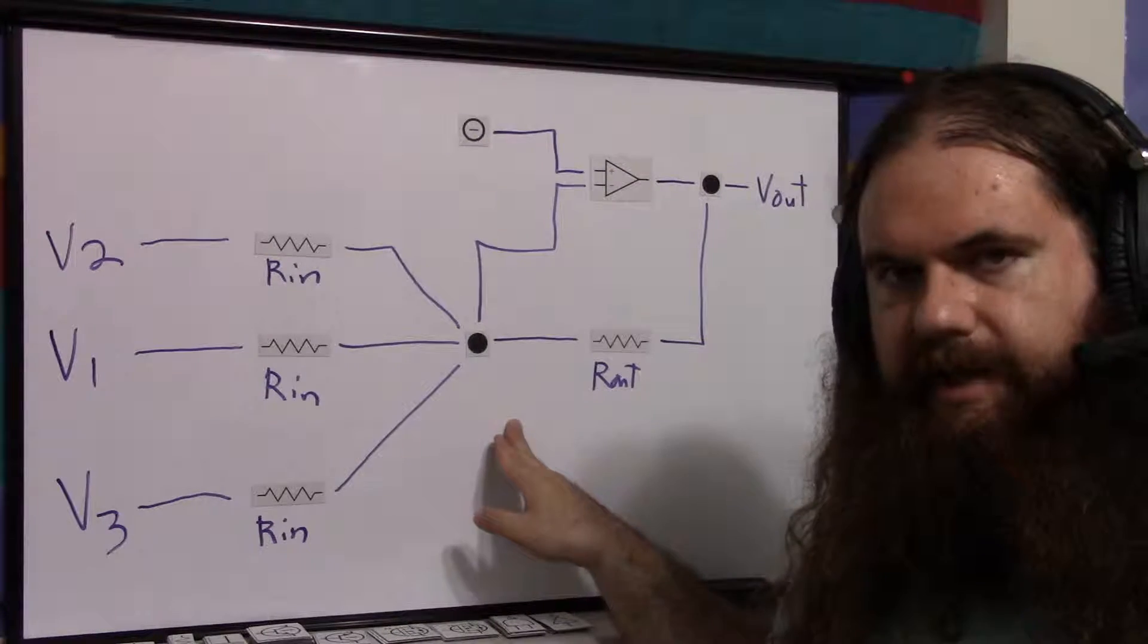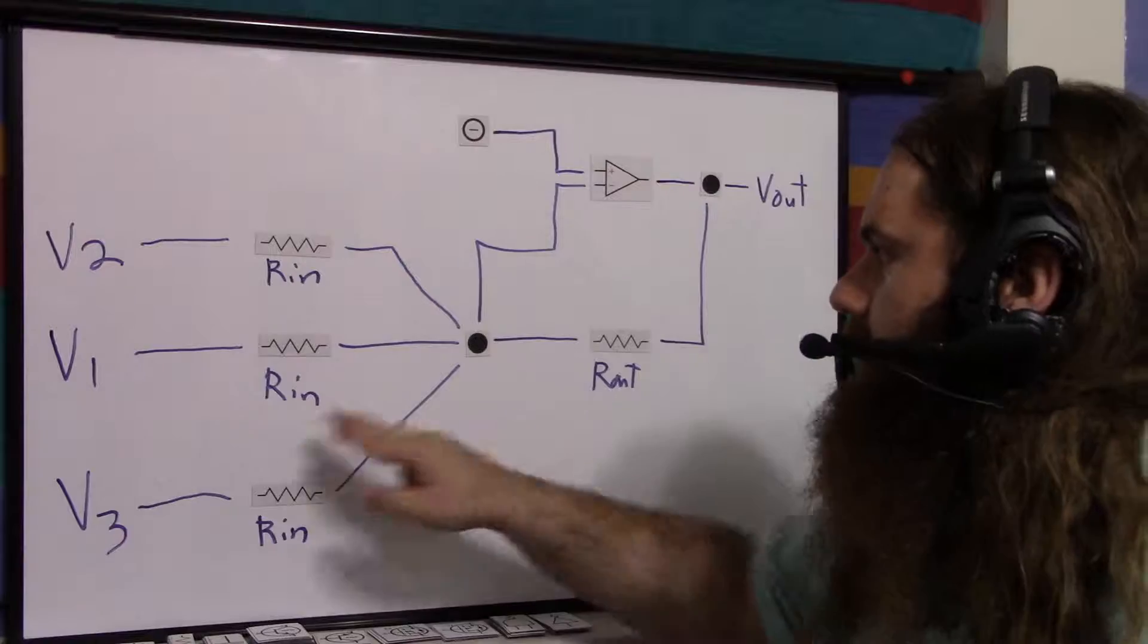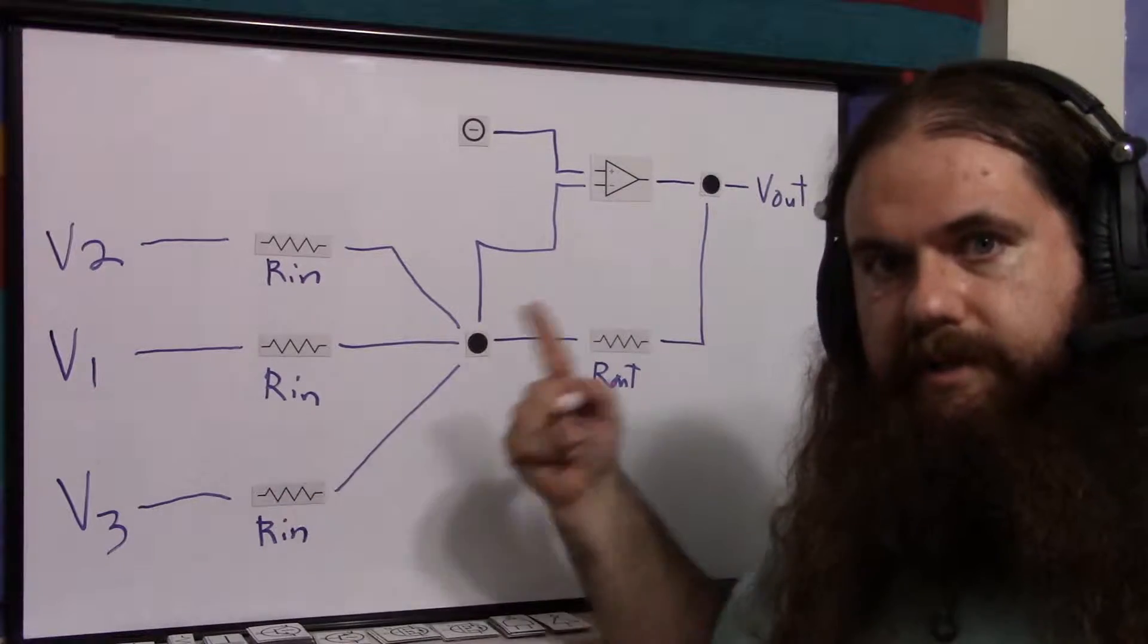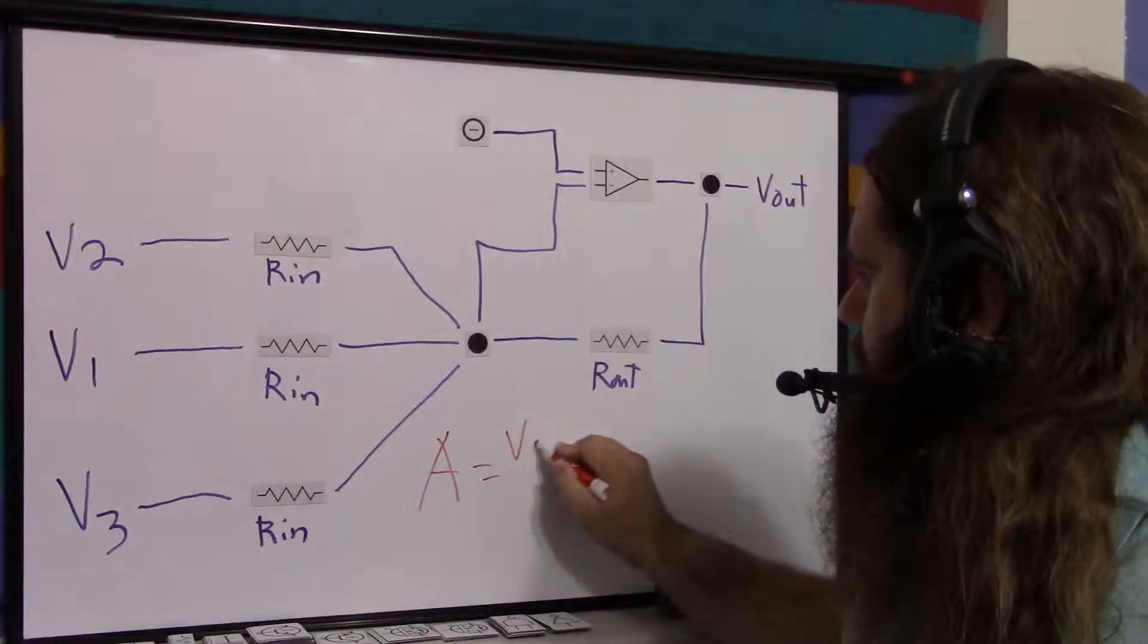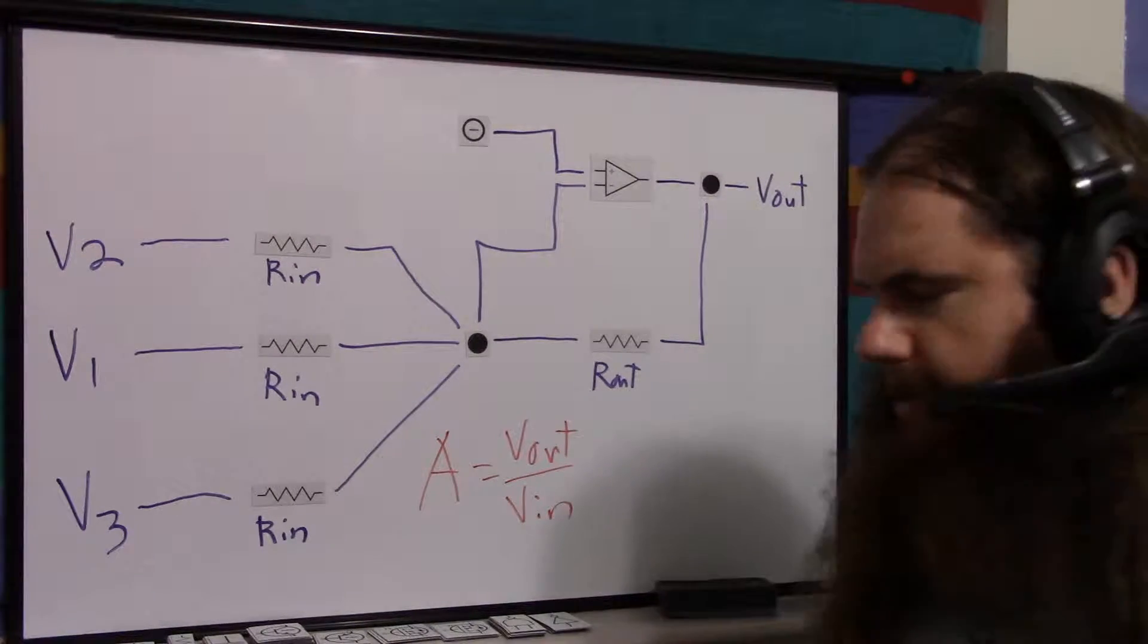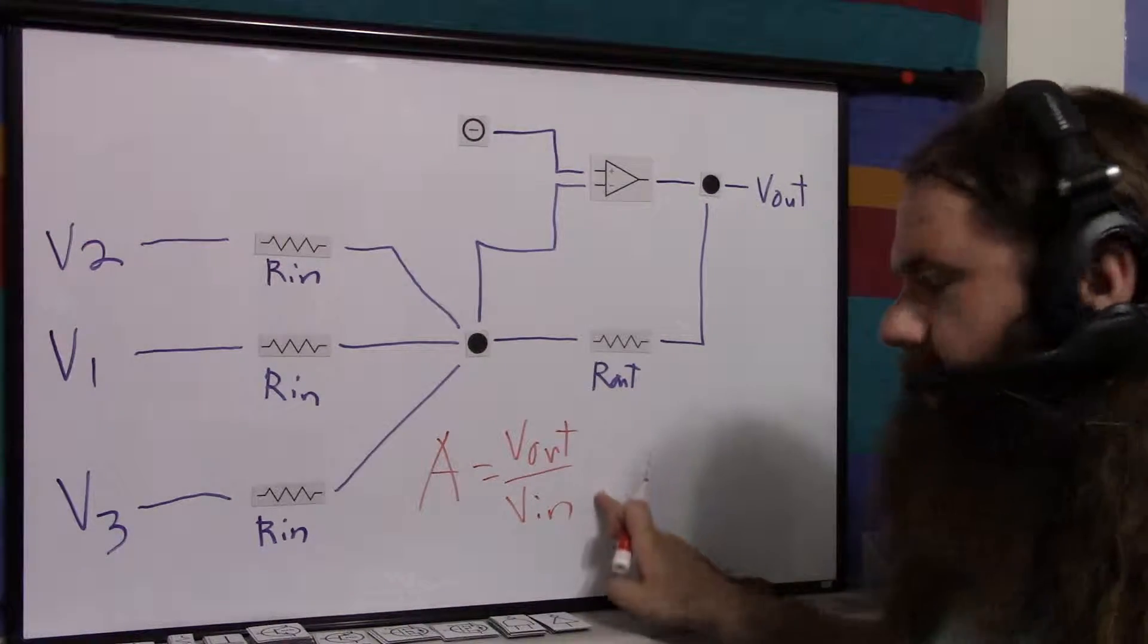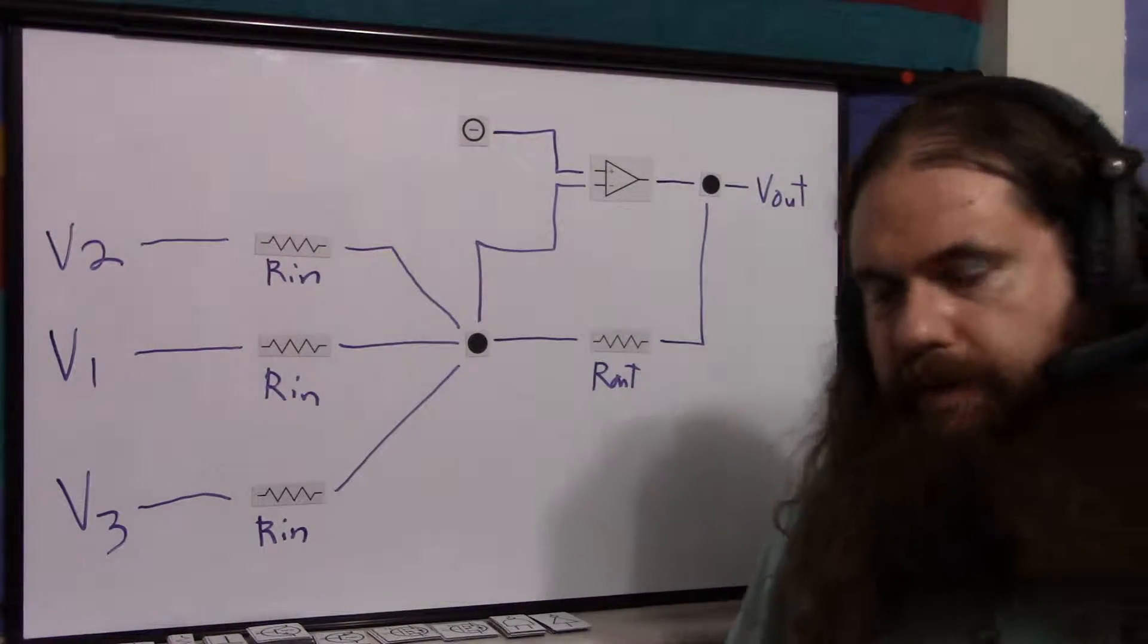So this works exactly as the inverting amplifier does. You can watch that video if you need an explanation. It just has multiple inputs, and the result is the sum of these voltages times a gain. Now, we write gain as V out over V in, the ratio, but we can't write that this time because there's not just one V in. So there's not one gain when we define it like this.